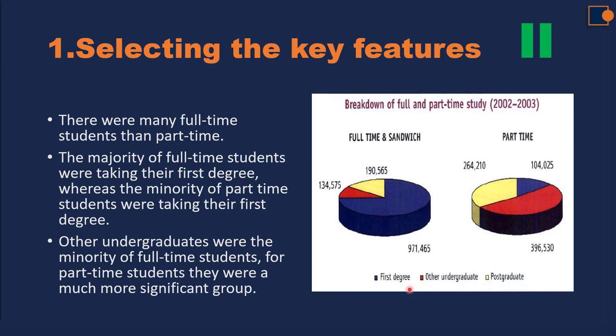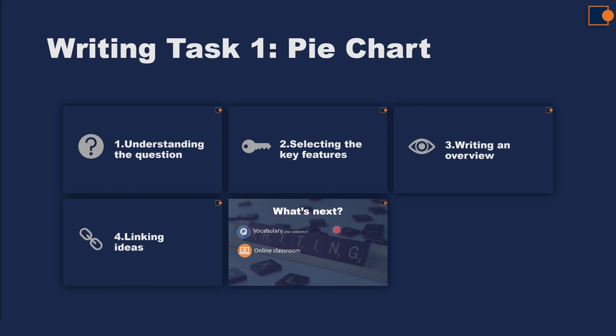Now we've done selecting key features. After that, you need to write an introduction first. I'm not going to explain writing the introduction in this series because I've already explained it in the first video lecture about the line graph. The rules for introduction are the same no matter what type of chart is in the task one question. You just have to paraphrase the rubric and you're done with the introduction. The next part is writing an overview.